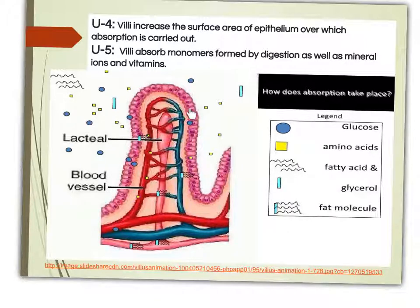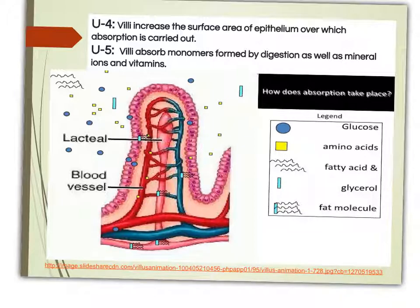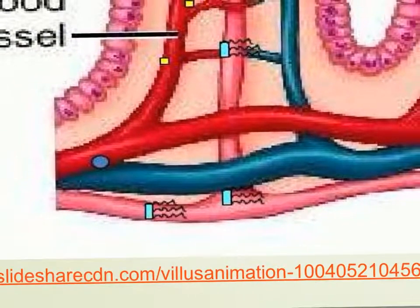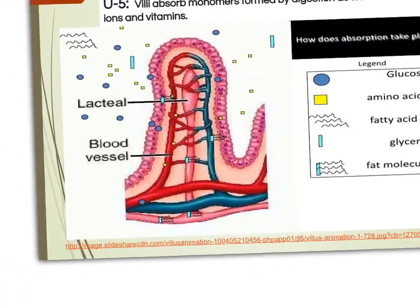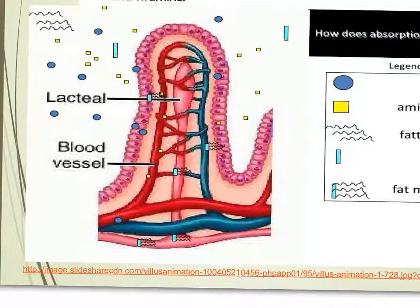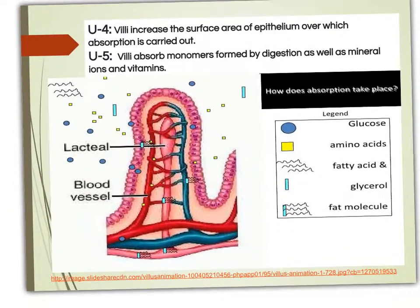Absorption of digested food mainly takes place through the villi, and the structure of villi is very important for its function. Different types of digested food — glucose, amino acids, fatty acids, and glycerol — enter into the villi through different processes. Glucose and amino acids enter into the blood vessels, while fatty acids and glycerol enter into the lacteal where they combine together to form fat molecules or triglycerides. These then move into the bloodstream and through the hepatic portal vein they go to the liver.